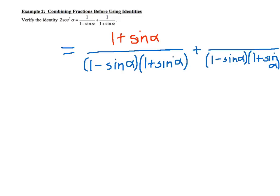So the second parentheses here is missing a 1 minus sine of alpha. So we need to multiply this by 1 minus sine of alpha. So when we do that, now we have a common denominator. We can add things together. We're going to say on the right, we have 1 plus sine of alpha plus 1 minus sine of alpha.